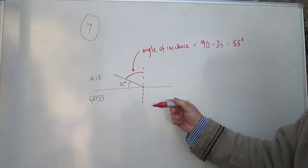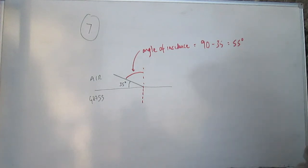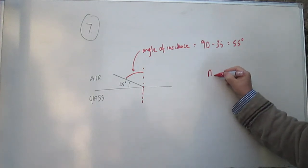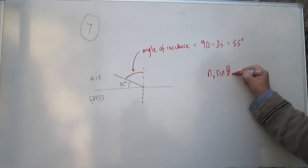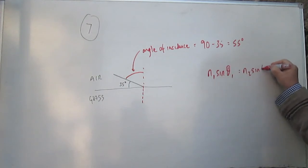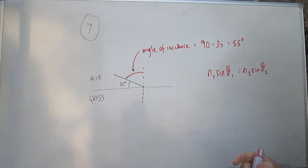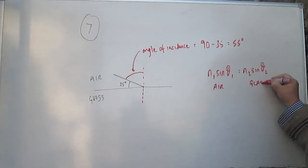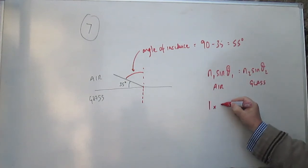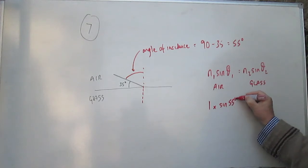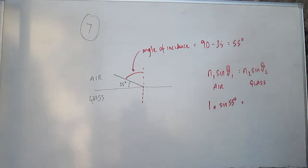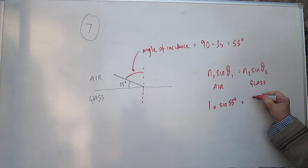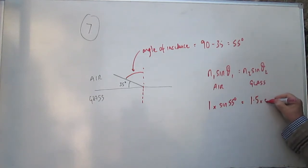And to work out what the angle is going to be once the light moves into there, we have to use the law of refraction, which is that n1 sine theta 1 is equal to n2 sine theta 2. So we've got that refractive index of air, if we make this the air and this the glass, we've got that 1 times sine 55 degrees, because the refractive index of air is 1, it's very close to what it would be in a vacuum, is equal to n2, the refractive index, which is 1.5 for the glass, times sine theta 2.